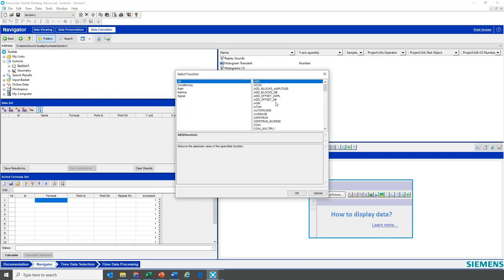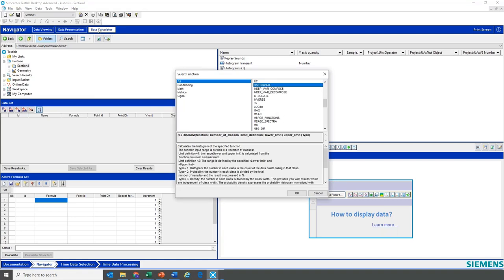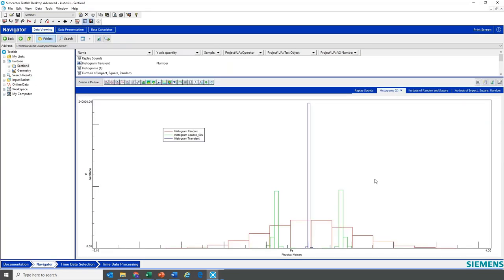And if you're using the software, you'll find things like histogram here in the data calculator. So if you click over here in the navigator, you can calculate a histogram. The histogram, here it is. We got the red is the bell-shaped curve. Green is our Texas longhorns. And then blue is our impact event.